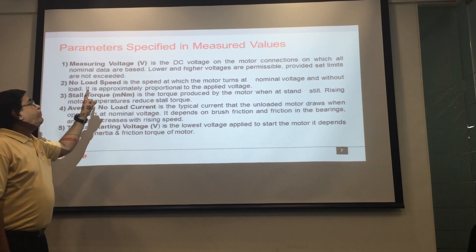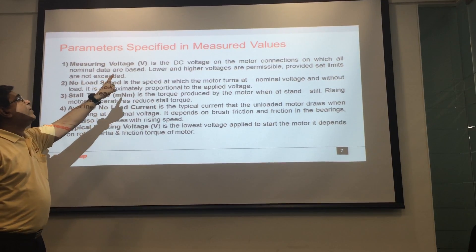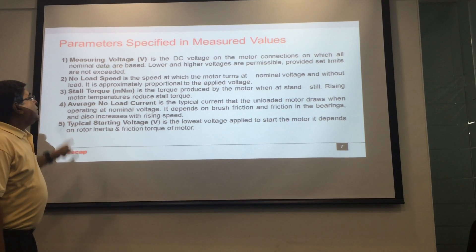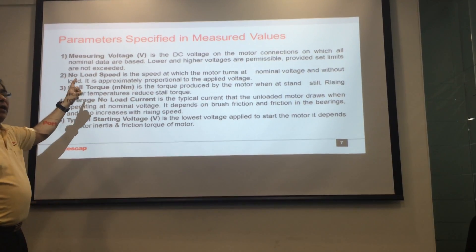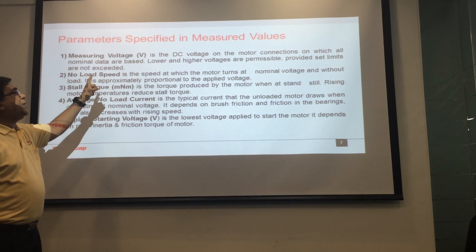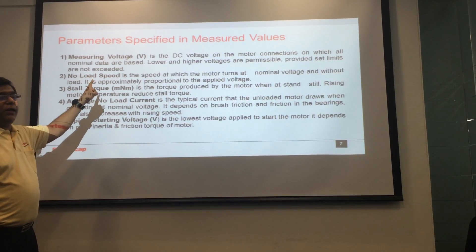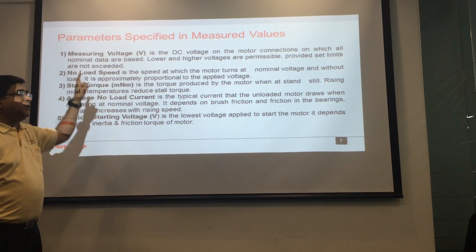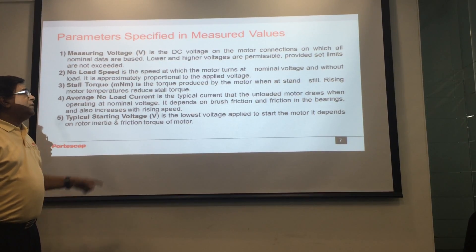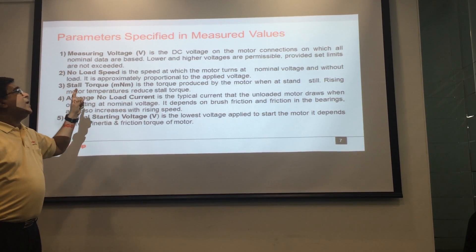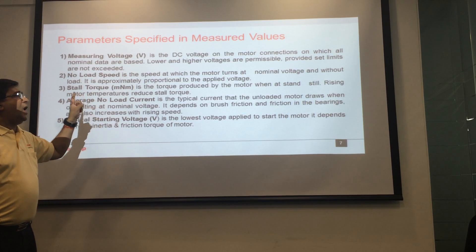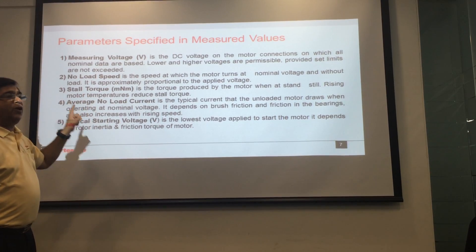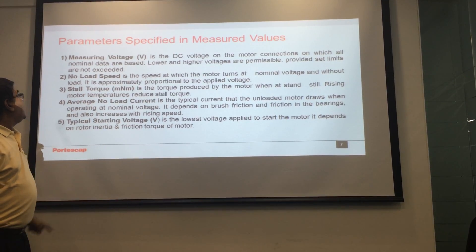Now we come to the first category of measured values. First is nominal voltage. It is the DC voltage on the motor connection on which all the nominal data is based. This voltage can be changed higher or lower, provided set limits are not exceeded.